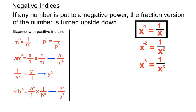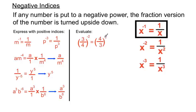Now here's another way we get questions on negative indices — evaluating with actual numbers. We've got three-quarters to the power of minus 2. That negative means the fraction should be turned upside down, so we flip 3 over 4 to make it 4 over 3, using up the minus, and it's being squared. There's a rule that when you square a fraction, the square operates on both the numerator and denominator. So we get 4 squared over 3 squared, which is 16 over 9.